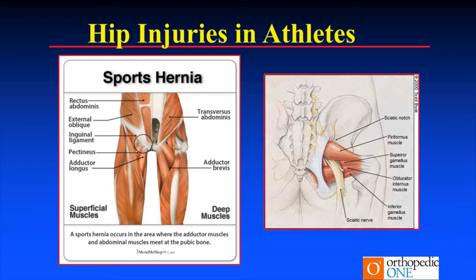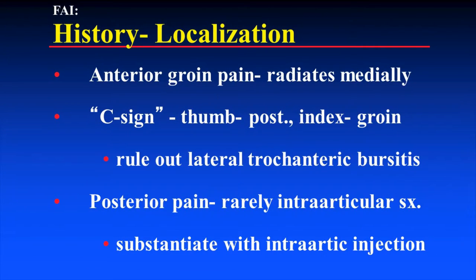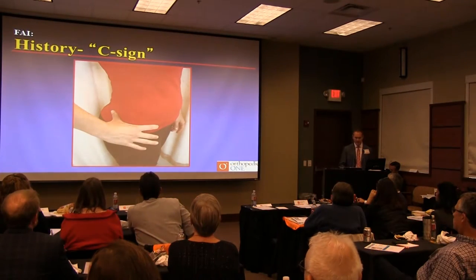We talked about piriformis syndrome. Localization — where is the pain? I can't stress that enough. Patients say 'my hip hurts' and it's back here or out here or right here. People don't know where their hip is. C sign — rule out lateral trochanteric bursitis. Posterior pain, as has been stated, is rarely intra-articular, but it can be, and an intra-articular injection can help sometimes.